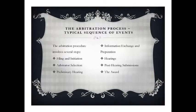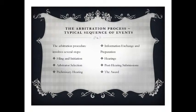Then there is information exchange and preparation, where the parties prepare for presentation and exchange information. At the hearing, both parties may present testimony and evidence to the arbitrator. Unless the case is very complex, this is usually the only hearing before the arbitrator. Then come post-hearing submissions, where the parties present any additional documents or documentation as allowed by the arbitrator. Finally, there is the award — the final stage where the arbitrator closes the record on the case and issues a decision, including an award if applicable.